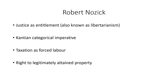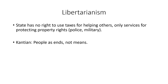Moving on to Robert Nozick, he holds four principles. One is justice as entitlement, also known as libertarianism. The next is the Kantian categorical imperative, which we covered in our ethics tutorial. The third is taxation as forced labor or slavery, and the fourth is the right to legitimately attained property. Nozick's libertarianism is the view that the state has no right to use taxes to help others — only for services protecting property rights, such as the police and the military. Taxes can't be used for things like welfare.